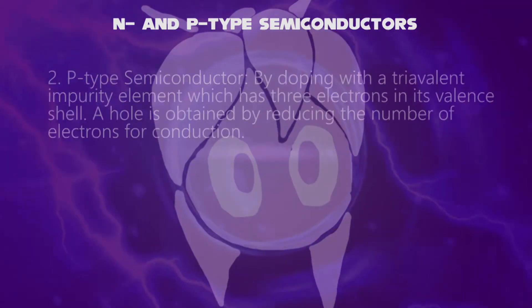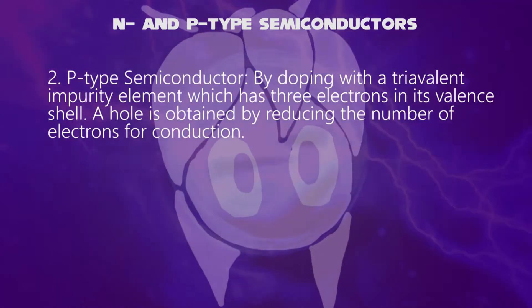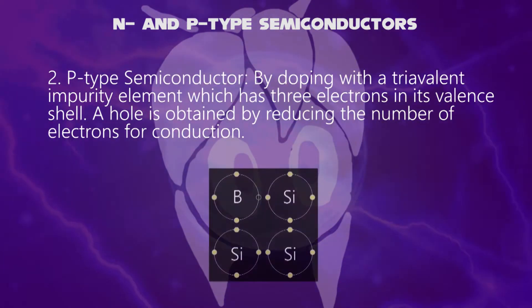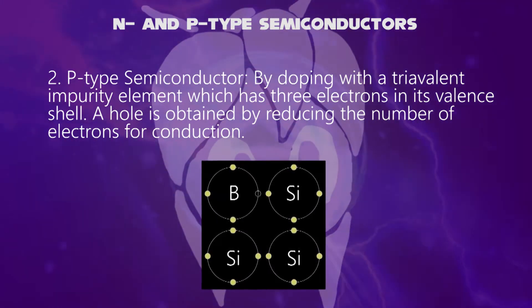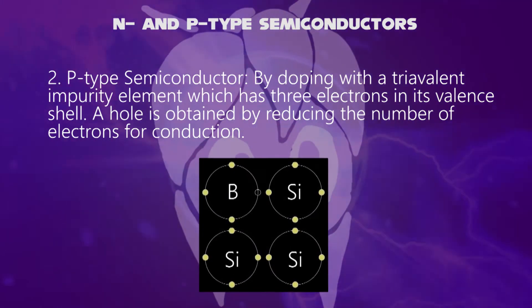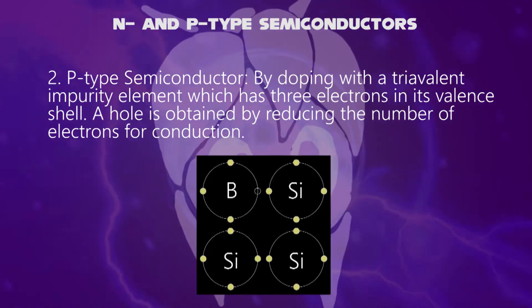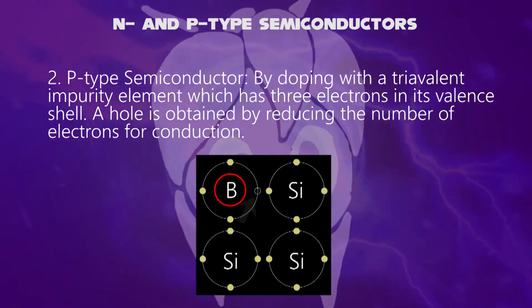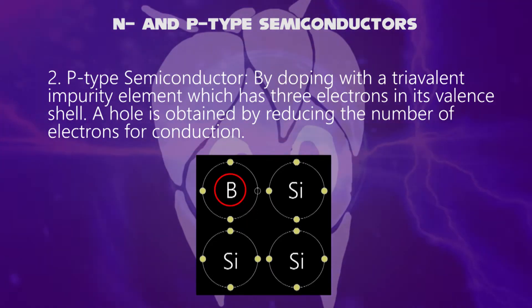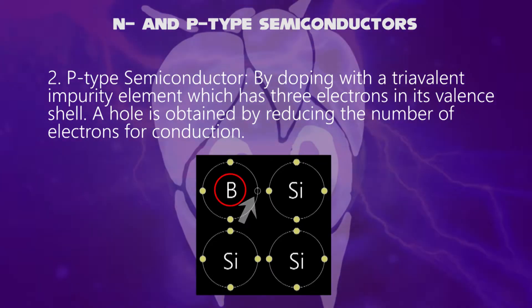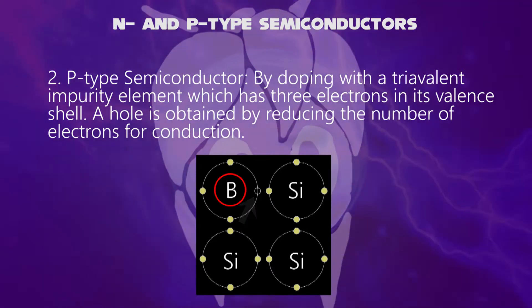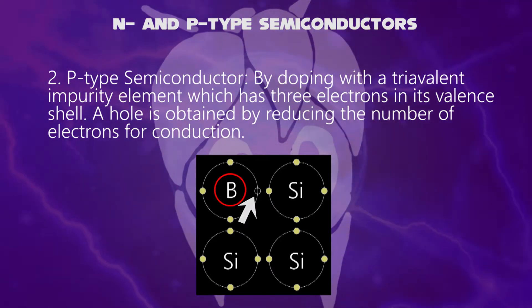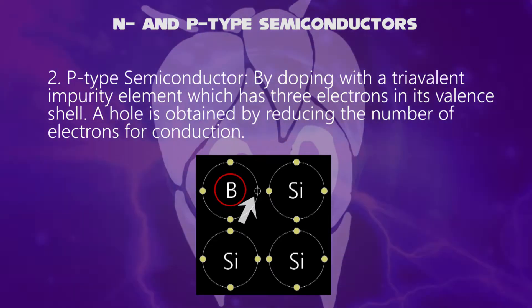On the other hand, in P-type semiconductors, it is doped with a trivalent impurity element which has three electrons in its valence shell. As a result, a hole is left, such as doping boron. You can also show that aluminum can also be doped. This is the difference between N and P-type semiconductors.